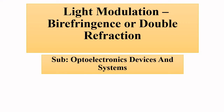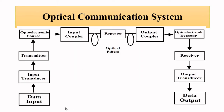Hello friends, welcome to Engineering Tutorial. We'll continue our discussion related to optoelectronics devices and systems. In this video, we'll be discussing external or indirect methods of light modulation. In an optoelectronic communication system, light is the main carrier component of the data, so in order for data or information to be transmitted from the sender to the receiver, some parameters of the light wave have to be changed.